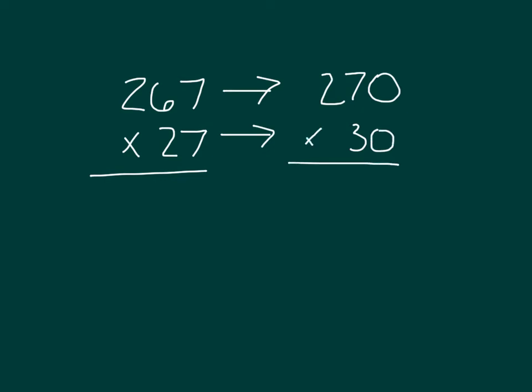This looks very much like what we were working on yesterday, where we have 270 times 30, or 270 times 3 tens. What we'll do is, just like yesterday, we'll take this 3 here and figure out this multiplication problem of 270 times 3, and then we'll multiply by 10.